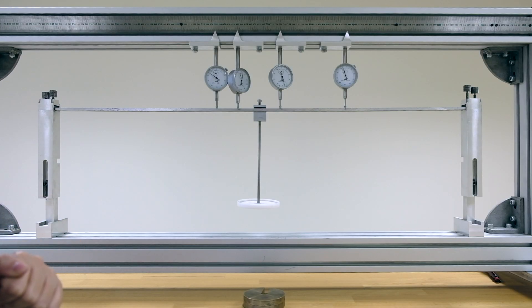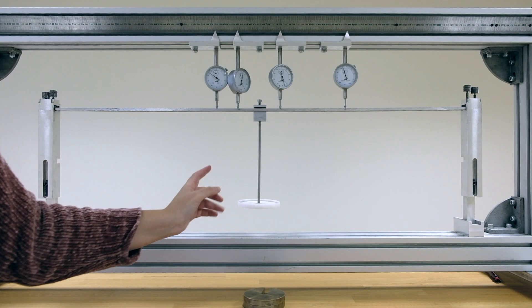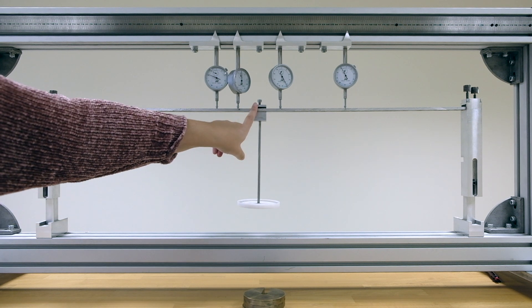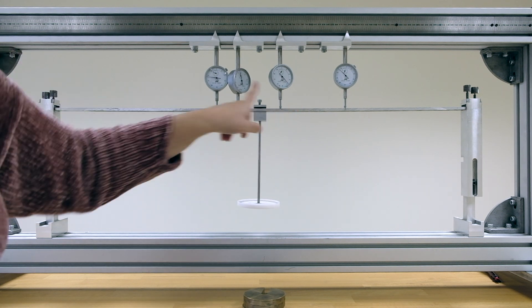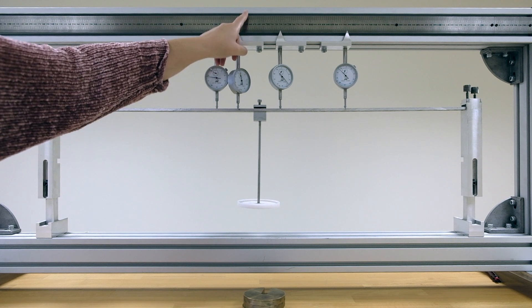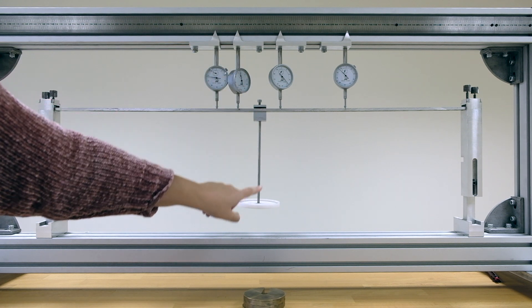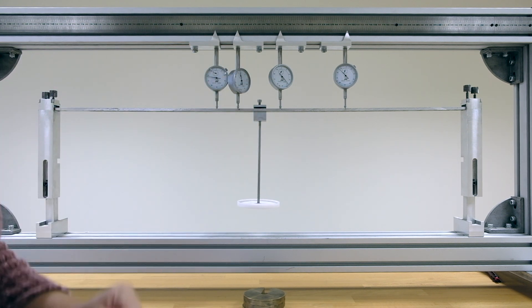We will be applying the load through this hanger, but you need to make sure that your hanger is placed directly in the middle of the beam, and you should measure the position of your hanger and record the position.